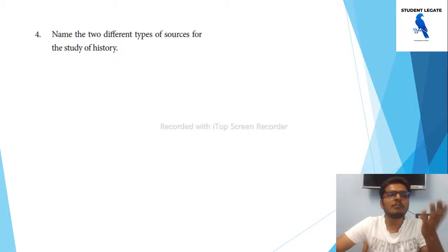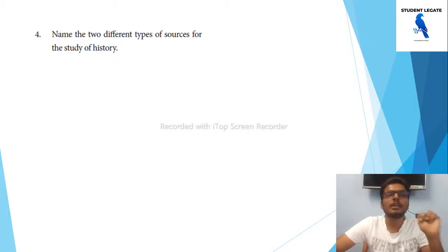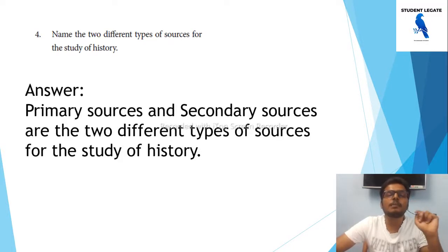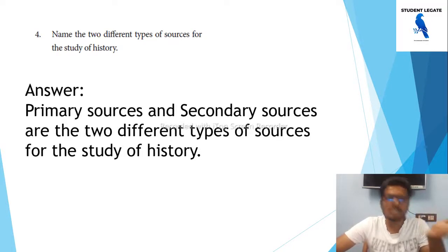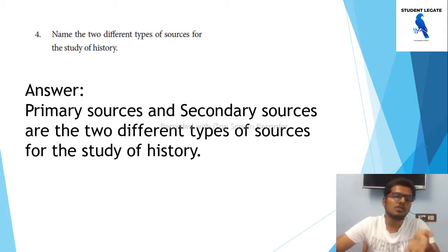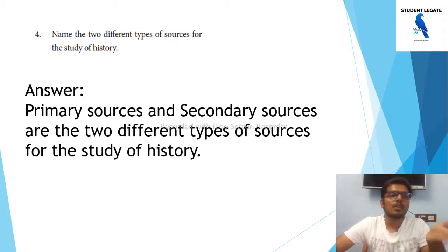Name two different types of sources for the study of history. History is based on two different types of sources for the study of history.